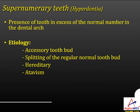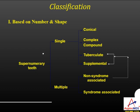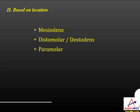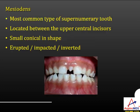Supernumerary teeth are teeth present in excess of the normal number in the dental arch. They can arise from accessory tooth buds, splitting of a regular tooth bud, hereditary factors, or atavism. Supernumerary teeth can be single or multiple. Single teeth can be conical in shape, complex or compound odontoma, tuberculate shape, or supplemental — same morphology as adjacent teeth. Based on location they are classified as mesiodens, distomolar, or paramolar. Mesiodens is the most common type — a small conical tooth between the maxillary central incisors, which may be erupted, impacted, or inverted.